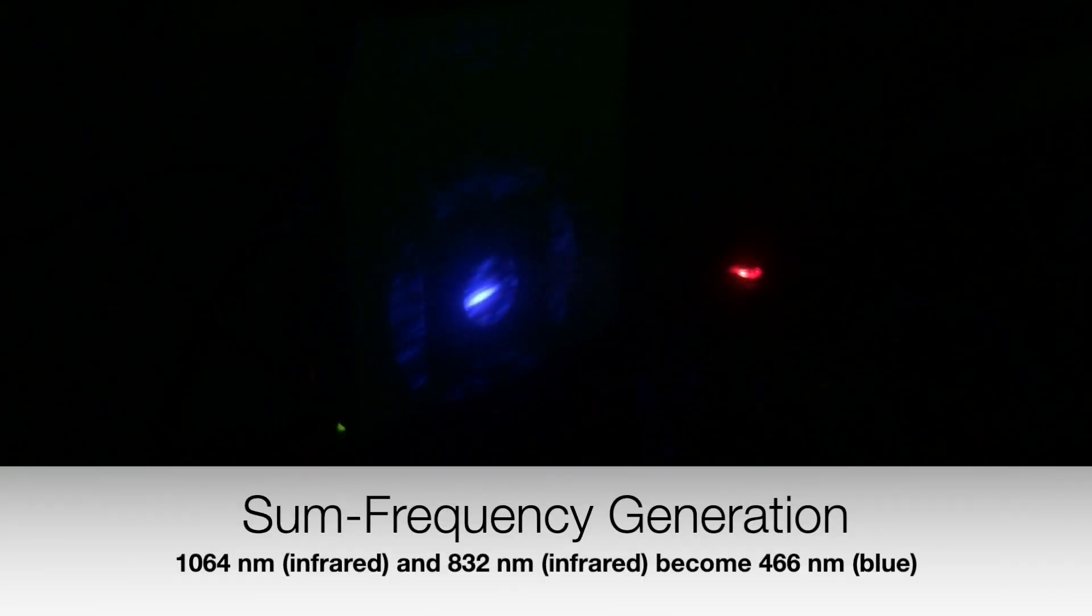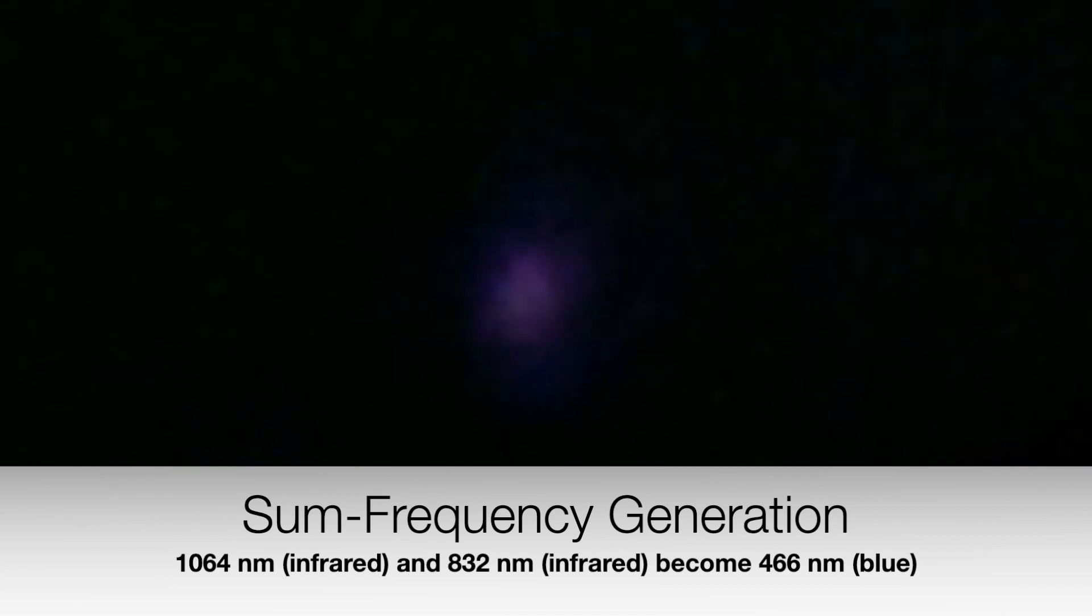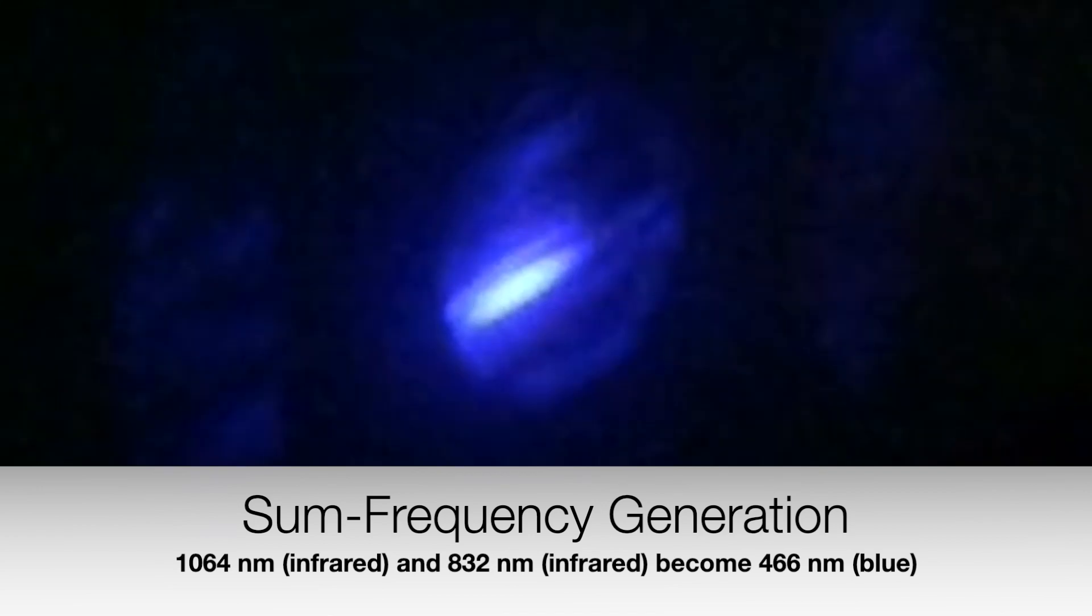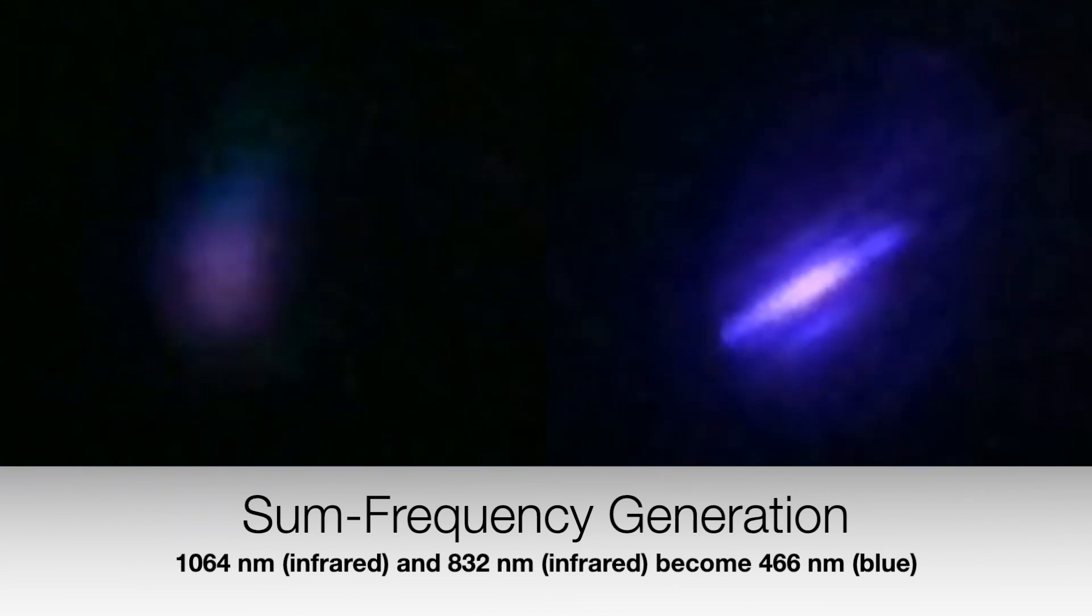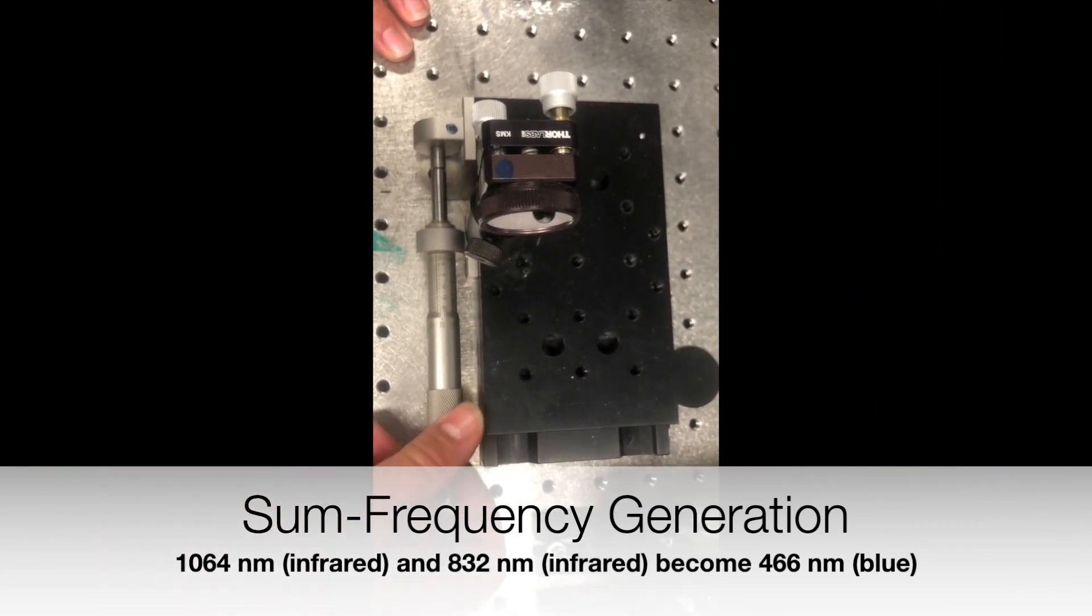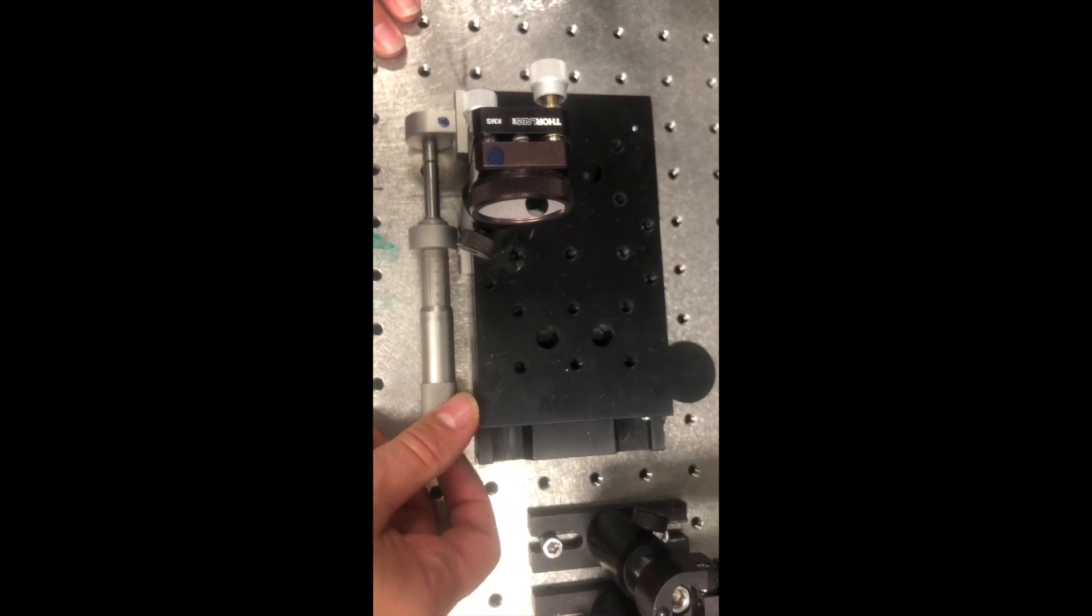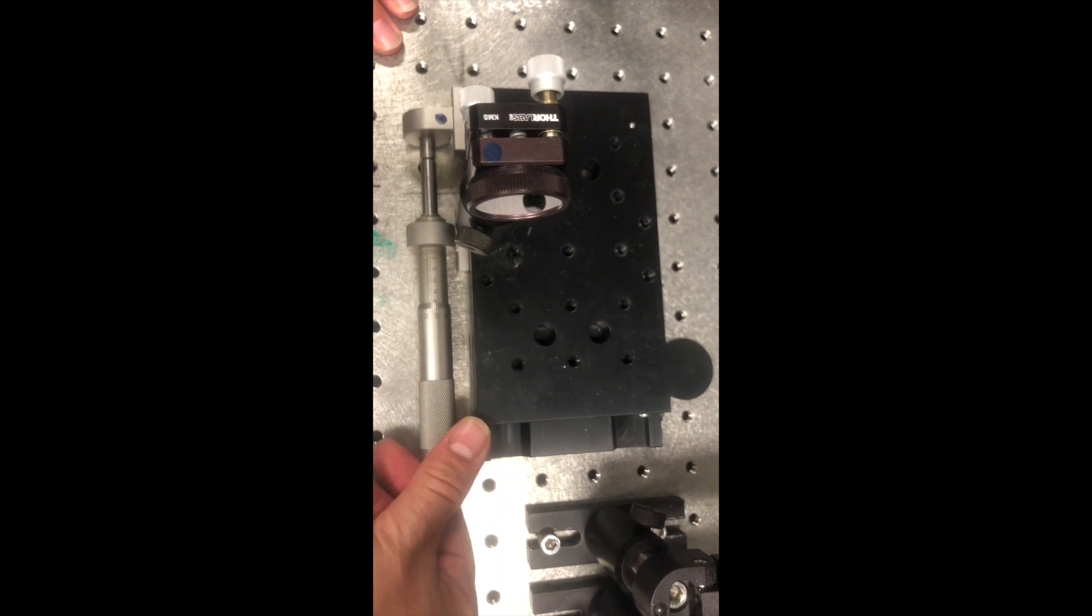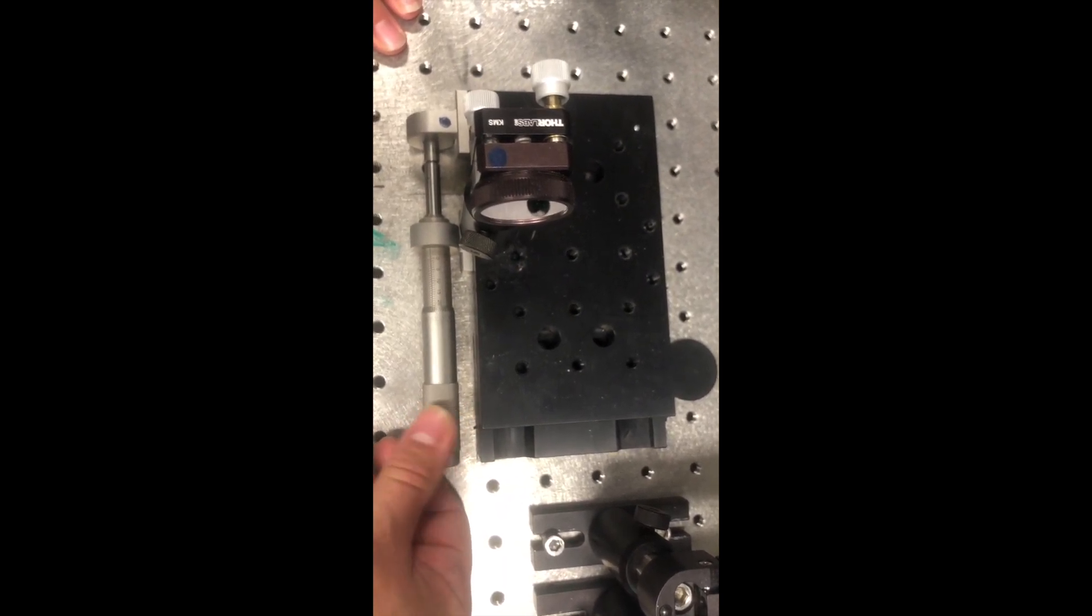But then the really interesting part is to combine two different colors, 1064 and 832, through a phenomenon called sum frequency generation, to generate yet another beam in the blue instead of purple at 466. This is more difficult because we need to have both beams at the same place in the crystal at the same time. And therefore, we need to adjust the delays so that both beams are there simultaneously.